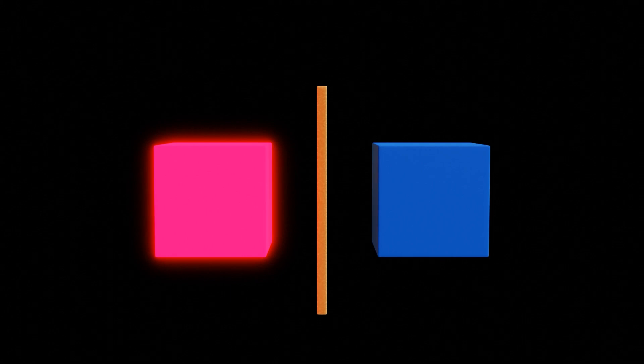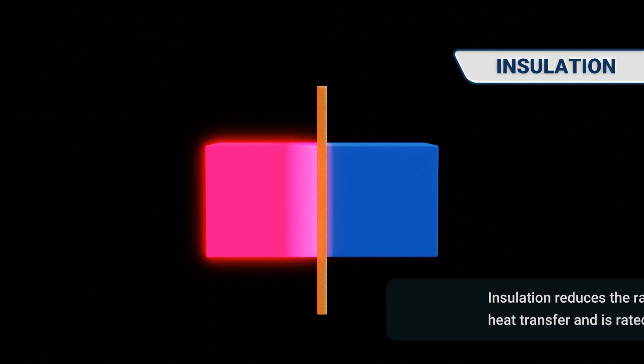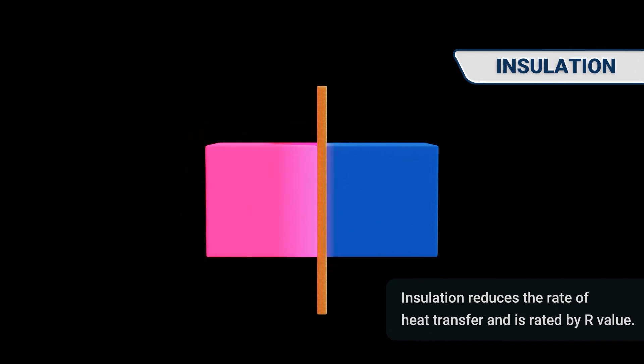We use insulation to oppose conduction, reducing the rate of heat transfer. Insulation that opposes conduction is rated by R value. R represents the resistance to heat movement. The higher the R value, the lower the heat transfer rate.